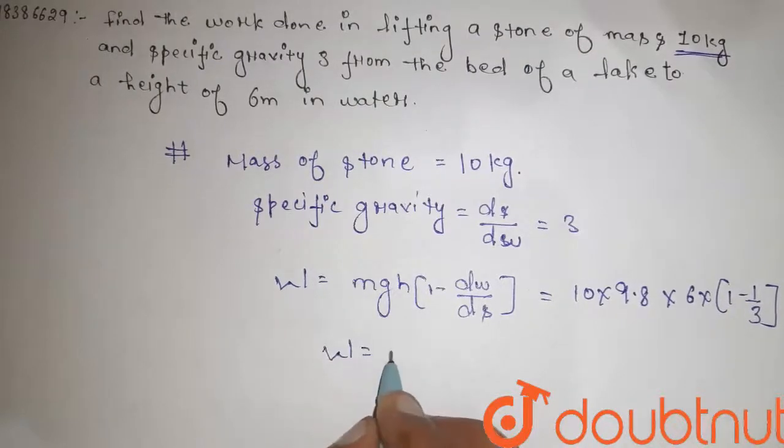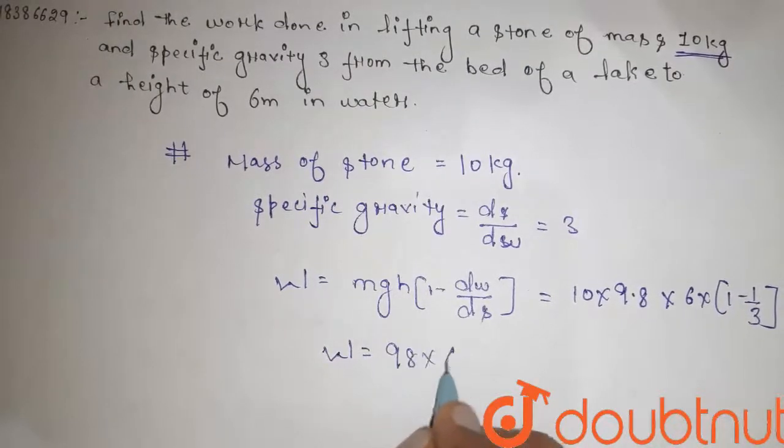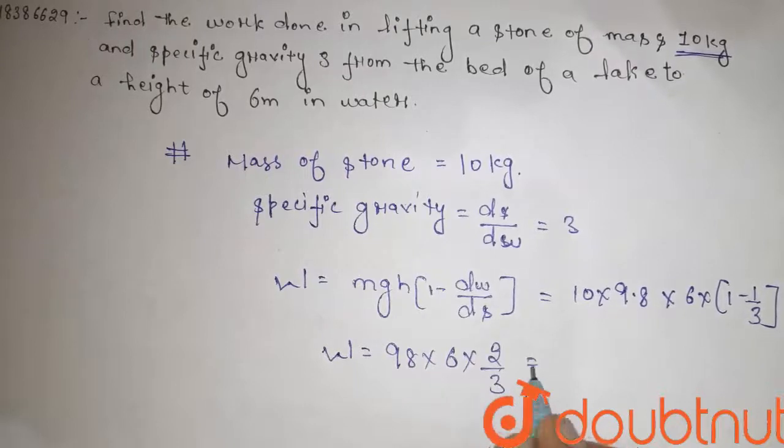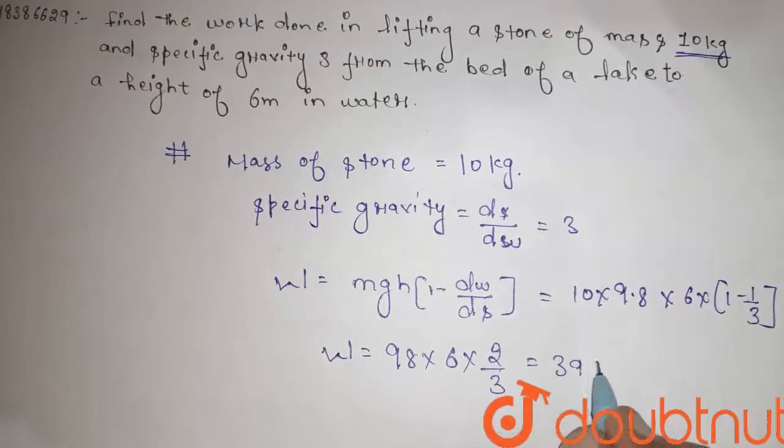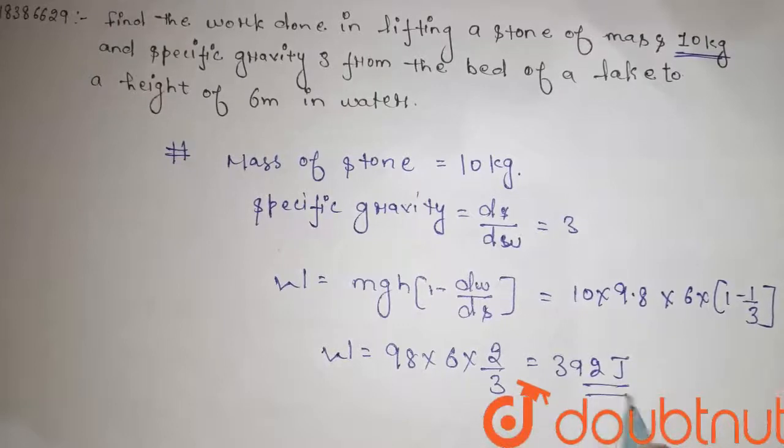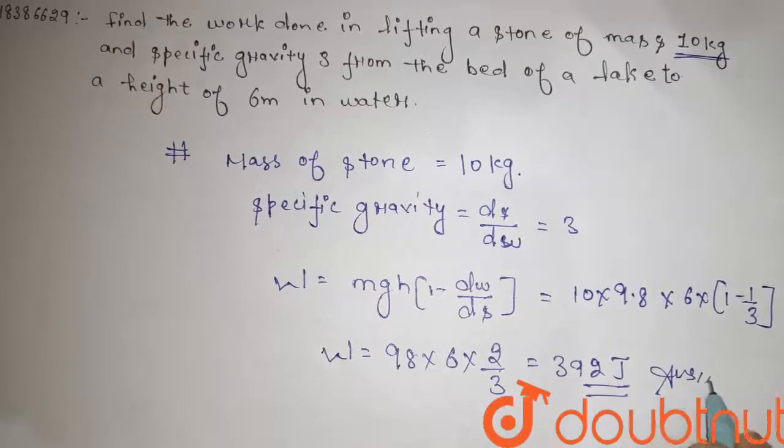So guys, the work done is 98 times 6 times 2 by 3, that would be 392 joules. This is the final answer. Thank you.